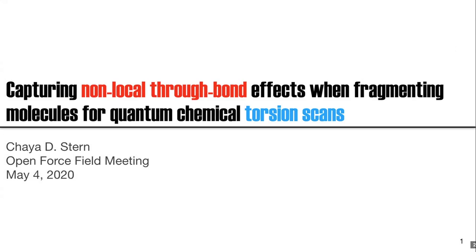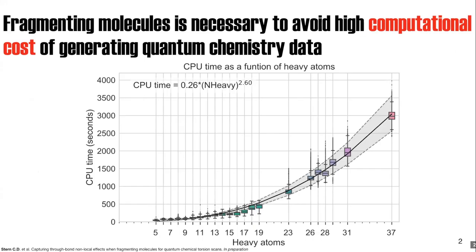Today I will talk about fragmenting molecules in such a way so that we don't destroy the chemistry around the bond. We also want to make sure that we capture non-local through-bond effects for these torsion scans. The main reason we need to fragment molecules is to avoid the high computational cost of running quantum chemistry torsion scans.